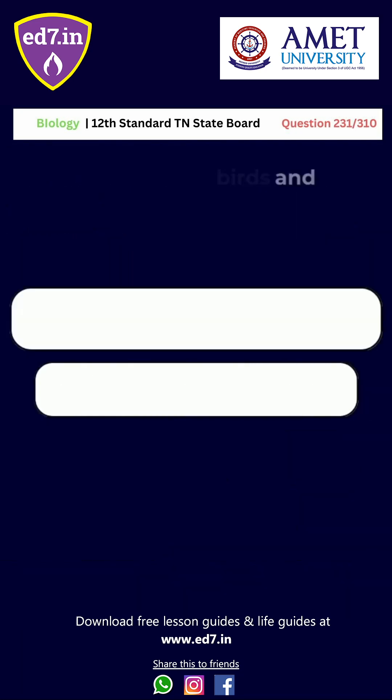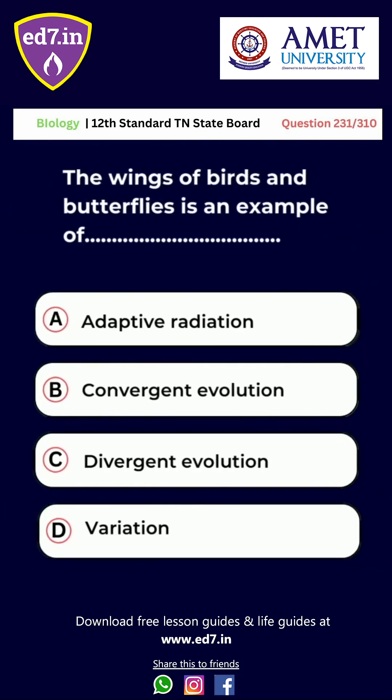Question number 231: The wings of birds and butterflies is an example of A. Adaptive radiation. B. Convergent evolution. C. Divergent evolution. D. Variation. The right answer is option B, convergent evolution.